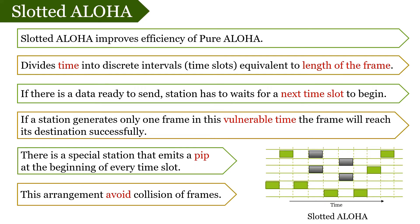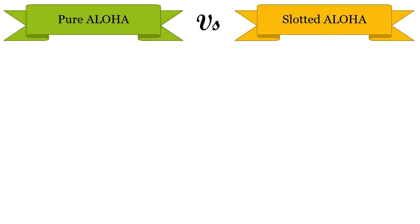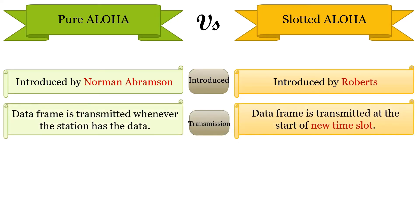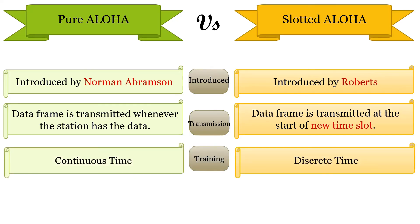Now let us discuss some differences between pure Aloha and slotted Aloha. Pure Aloha was introduced by Norman and his associates at the University of Hawaii in 1970, whereas slotted Aloha was introduced by Robert in 1972. In pure Aloha, whenever a station has data to send, it transmits without waiting, whereas in slotted Aloha a user waits till the next time slot begins. In pure Aloha the time is continuous, whereas in slotted Aloha the time is discrete and divided into slots.